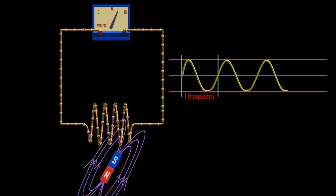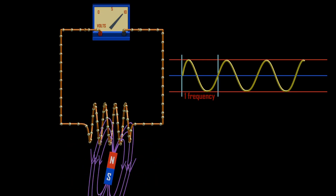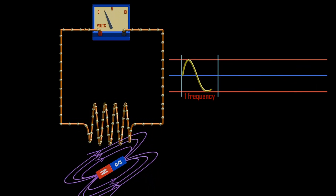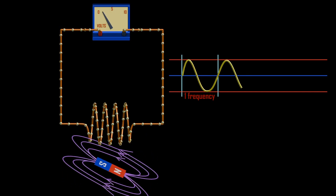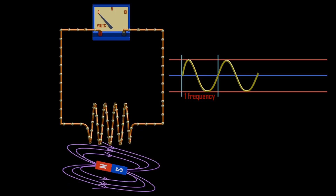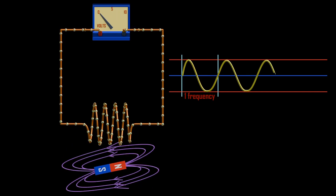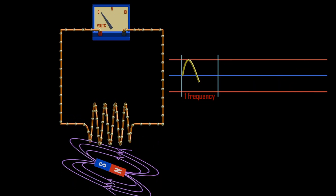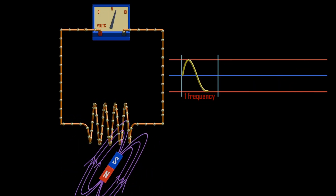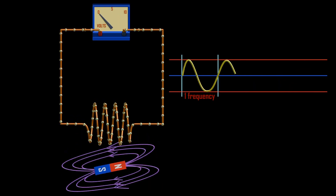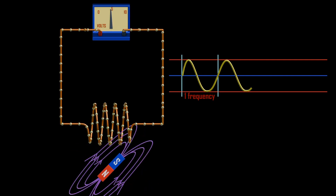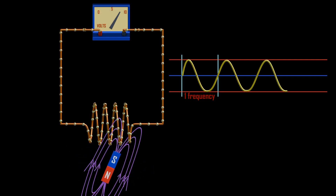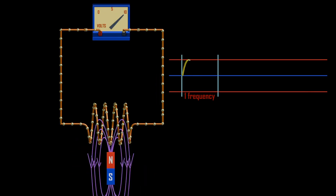Similarly, when the north pole of a magnet approaches, the electrons' flow will increase gradually, then decrease gradually as the pole moves away. But this time the direction of the current reverses. So when we plot these values, we will form a sinusoidal waveform.